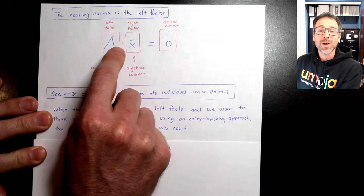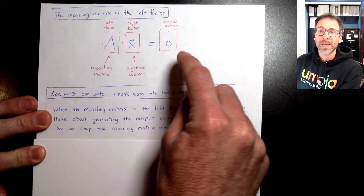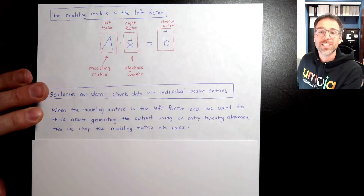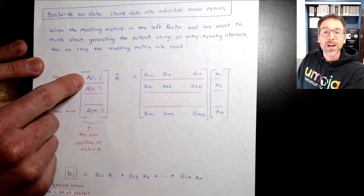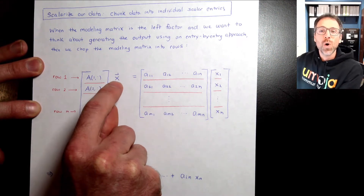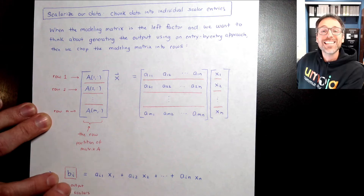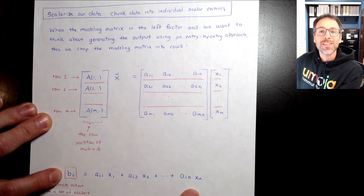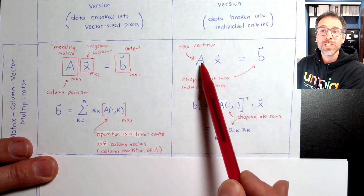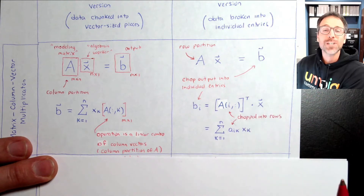When our modeling matrix is on the left and we scalarize our data, we think about B not as a vector but as a sequence of scalars. In that situation, we break the modeling matrix A into rows — the row partition of A — and take the dot product of each individual row with the vector x. The i-th row dotted with x gives the i-th entry of the output vector B. So with the modeling matrix on the left and scalar valued output, we take the row partition and dot each row with x.